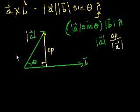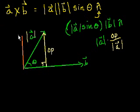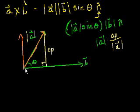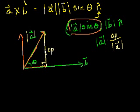So a sine theta is actually just the magnitude of this perpendicular line. It doesn't matter where the vectors start from — you can shift vectors around. Another way to think about it: it is the component of vector a that is perpendicular to vector b. We're used to splitting a vector into x and y components, but here we split vector a into a component parallel to b and a component perpendicular to b. So a sine theta is the magnitude of the component of vector a that is perpendicular to b.